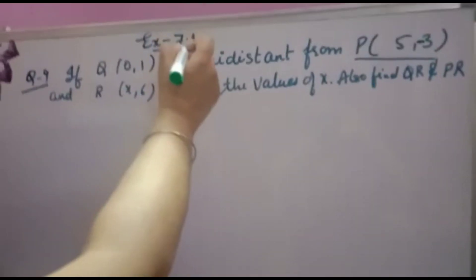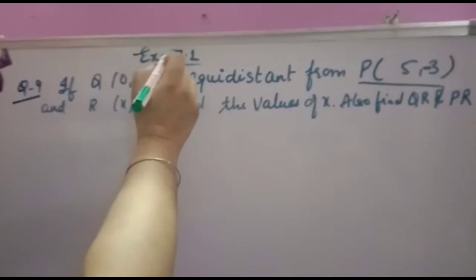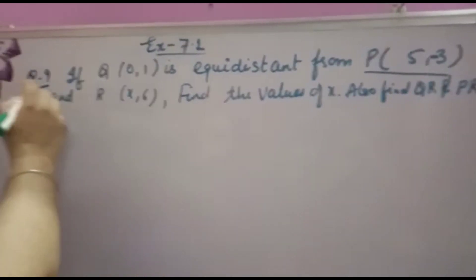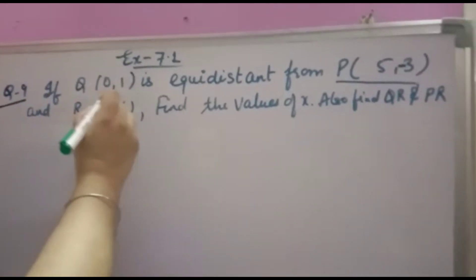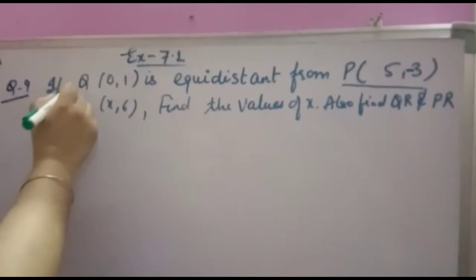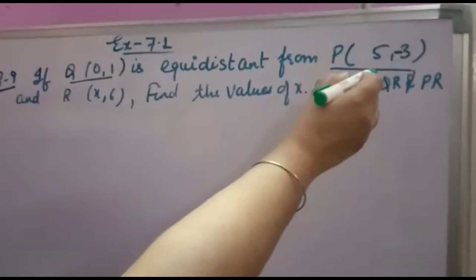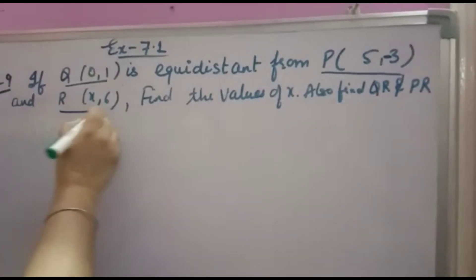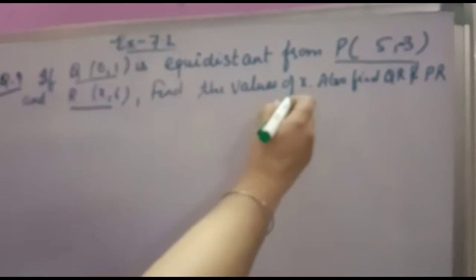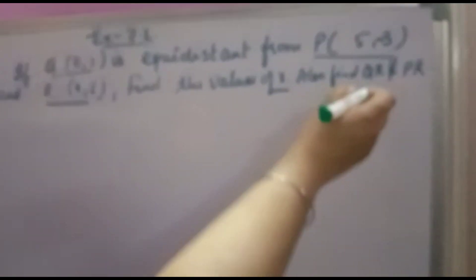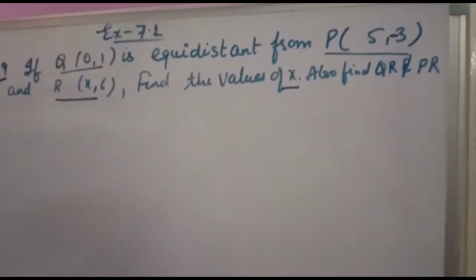Welcome back to your favorite channel Math Helper XA7.1's equation number 9th. If Q is equidistant from P and R, find the value of X. Also find QR and PR.